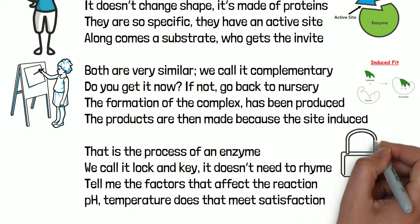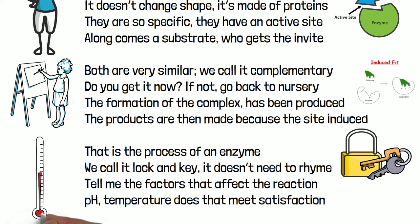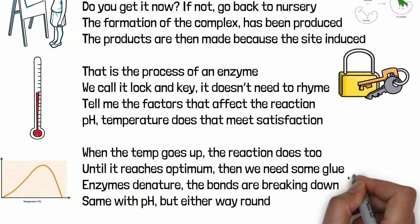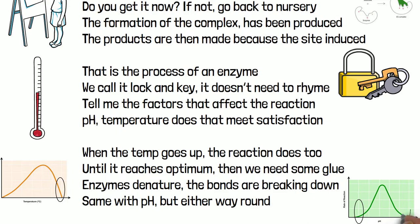Tell me the factors that affect the reaction: pH, temperature. When the temperature goes up, the reaction does too, until it reaches optimum — then the bonds start breaking down. Enzymes denature in nature; same applies with pH, but either way round.